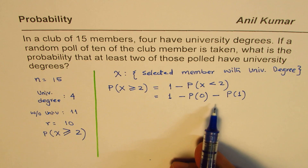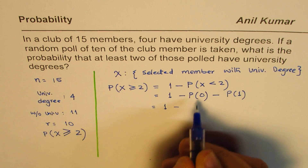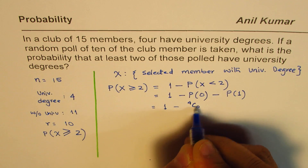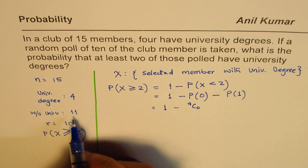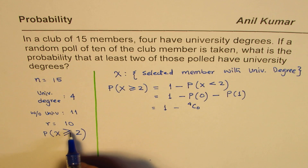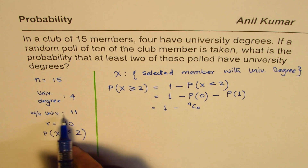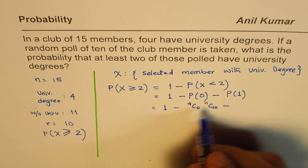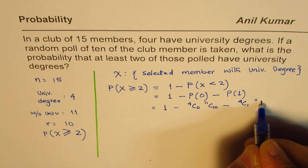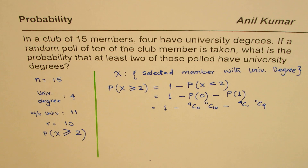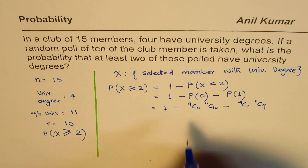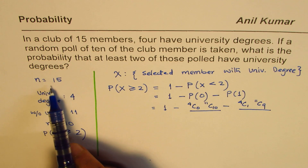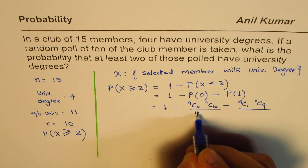None of them having a university degree means there are four with degrees and we are selecting none of them, so that should be 4C0. All which have been selected are without a university degree, and we are selecting 10 of them, so all 10 selected are without a degree — that is 11C10. If we select one with a university degree, it becomes 4C1 times 11C9. These are all divided by 15C10, since selections are made from a group of 15 and we are selecting 10.